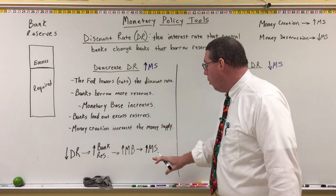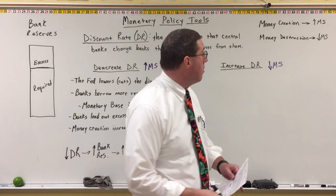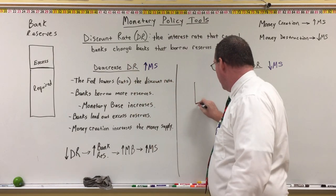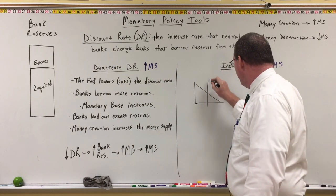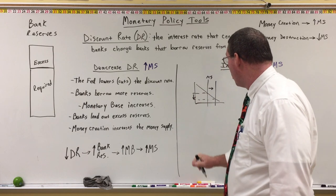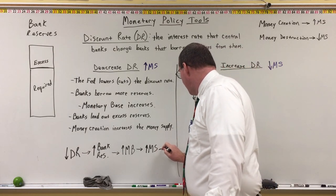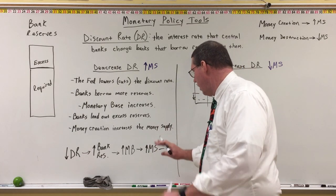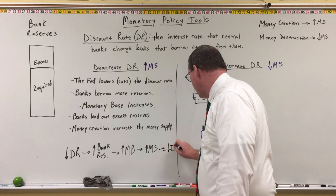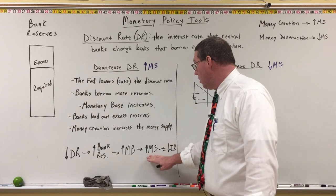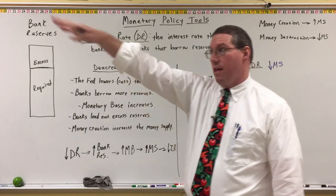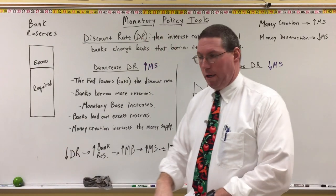When the money supply increases, in the money market the vertical money supply curve is going to shift to the right, and it's going to lower the interest rate. So interest rates will lower because the money supply increased. An increase in money supply leads to a decrease in interest rates, and when interest rates are lower, people tend to spend more money. The Fed is doing this on purpose — decreasing the discount rate to increase the money supply, so they can influence the economy and manipulate the aggregate market.